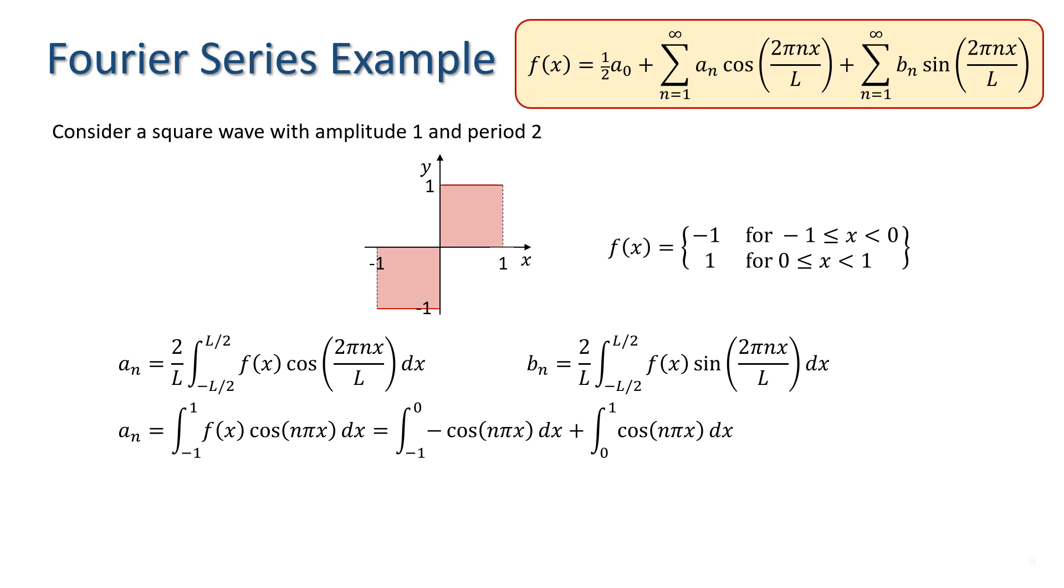Performing the definite integration, we have minus sin n pi x over n pi evaluated at x equals 0 and x equals minus 1, and sin n pi x over n pi evaluated at x equals 1 and x equals 0. We know that sin n pi is 0 for all n, thus this produces 0 values for a_n.